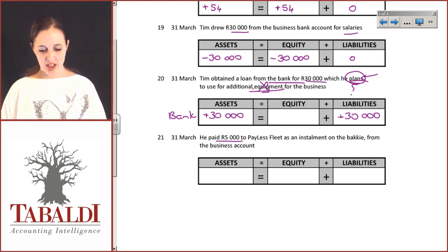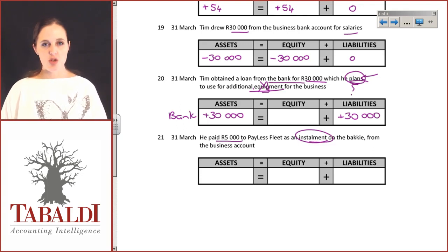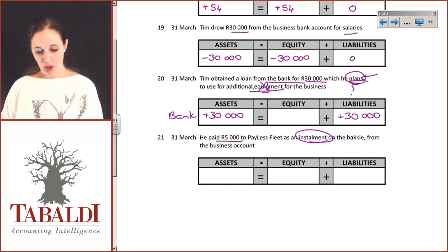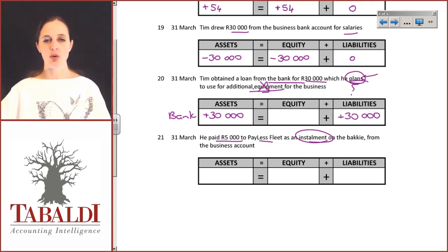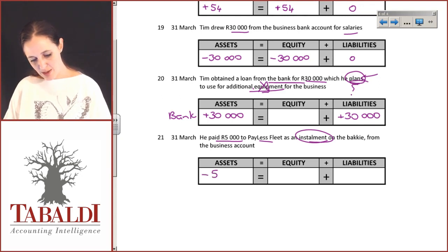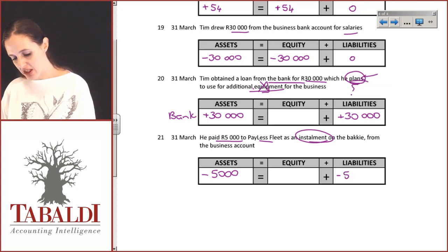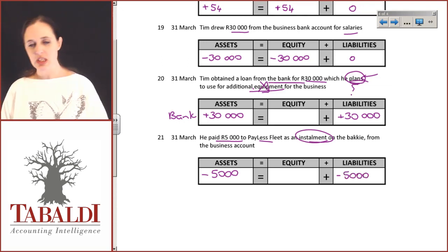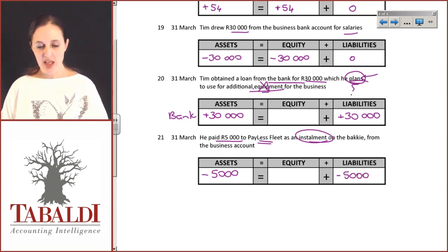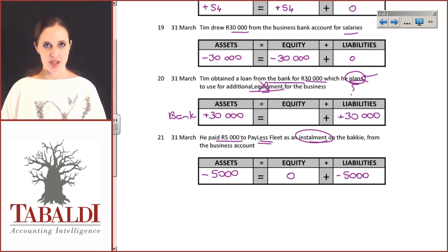He paid 5,000 Rand to Payless Fleet as an installment on the bakkie from the business account. Right at the beginning he bought the bakkie for 95,000 Rand, he owed them money and is now part-paying. So the bank account has decreased by 5,000 Rand, and his liabilities have decreased by 5,000 Rand to reflect that he doesn't owe them that much money anymore. There is zero impact on equity.